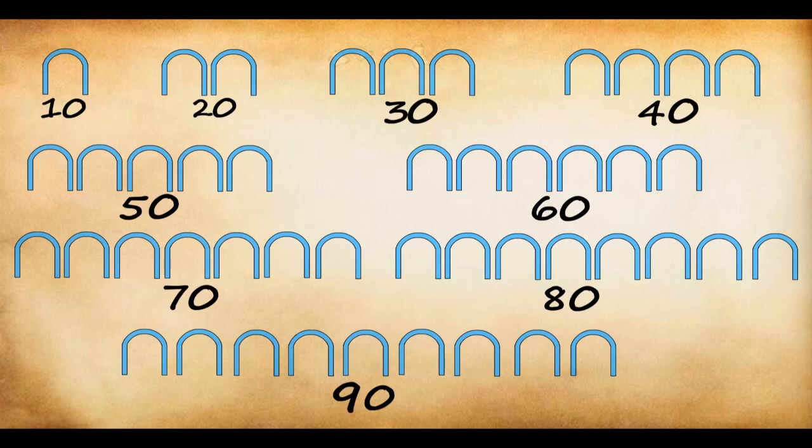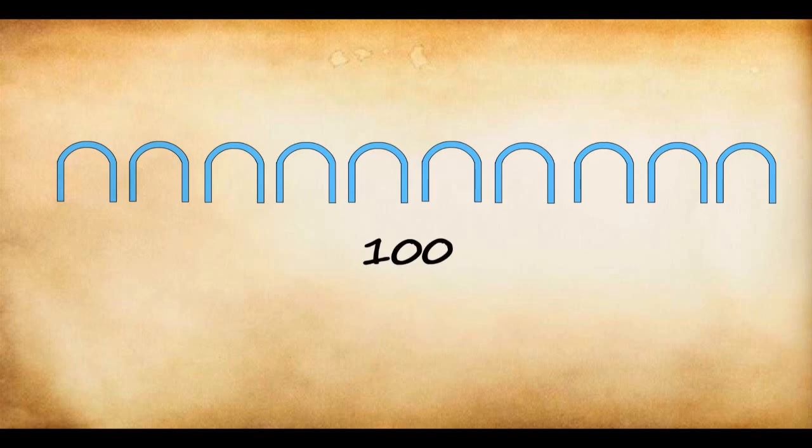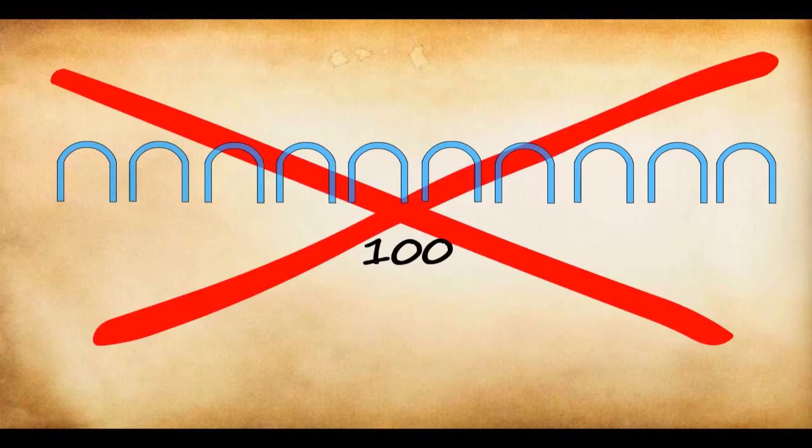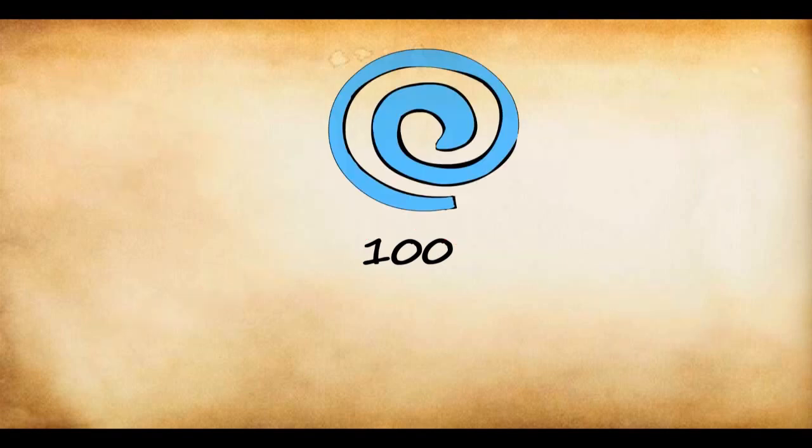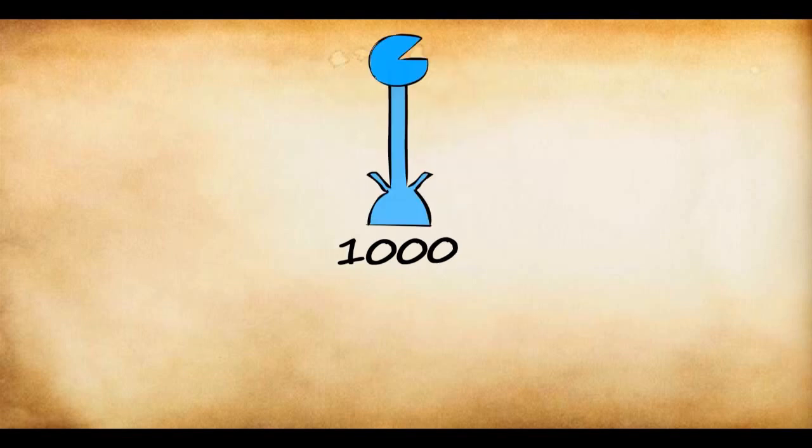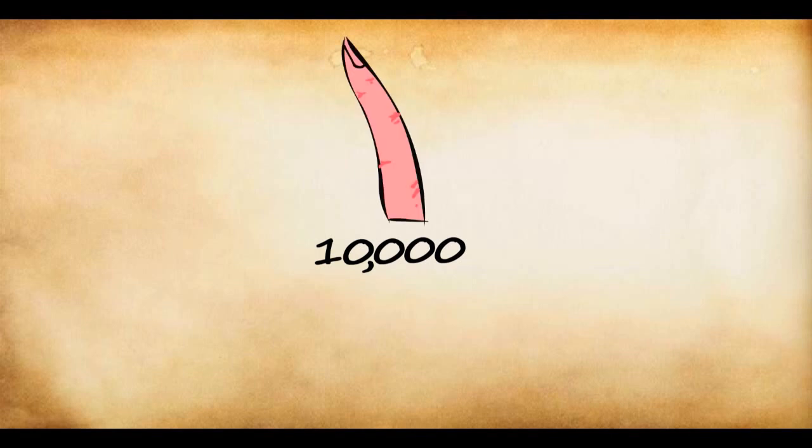Again, they realized that using 10 horseshoe to represent the number 100 would be too long. So instead for 100, they used the symbol of a coiled rope. Egyptians made a symbol for every power of 10. They used a lotus for 1000. For 10,000, they used a pointing finger. For a lakh, they used a tadpole. And an astonished man was used to represent 10 lakhs.